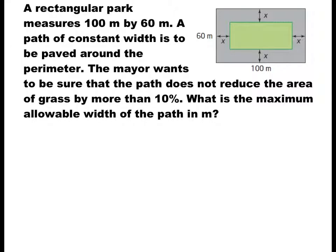The next example involves a rectangular park measuring 100 meters by 60 meters. The mayor wants to add a path of constant width x around the grass area. The path should not reduce the grass area by more than 10%. The question asks for the maximum allowable width of the paths — that is, the maximum value for x.